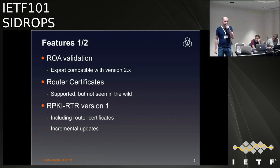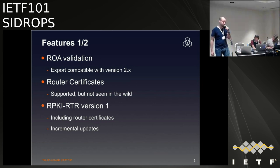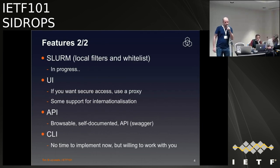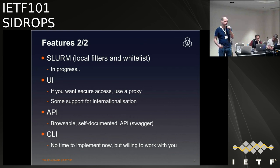Features are pretty similar to the current one. We have export of ROAs in CSV and JSON compatible with the earlier version. We have added support for router certificates and RPKI-RTR version 1, which mostly includes router certificates. We were not doing incremental updates earlier but have added this now. We are working on SLURM — local exceptions — where you can say ignore a certain prefix or router certificate and add your own. That's in progress. There's a UI.